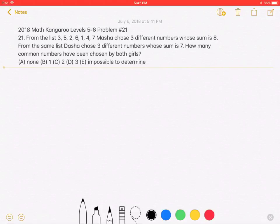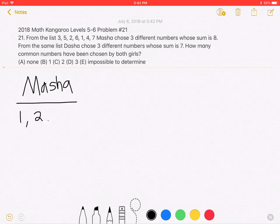Let's start by writing down the different choices Masa could have chosen. In order to have a sum of 8, Masa could have chosen 1, 2, and 5, or she could have chosen 1, 3, and 4.